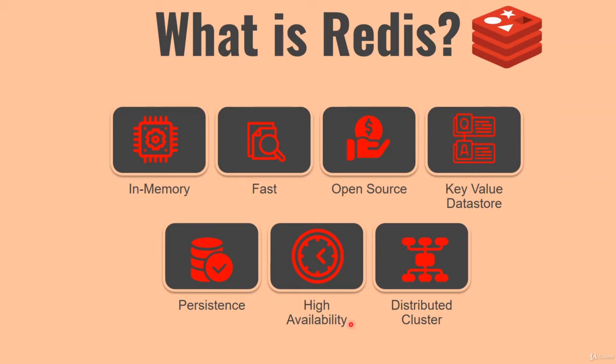Redis is highly available. What I mean is, you can install Redis on a single machine which is going to act as a primary server, and then you can have any number of slaves. The slaves are going to copy data at a regular interval from the master, and in case your master goes down, one of the other slaves is going to act as a master. This ensures that Redis is highly available.